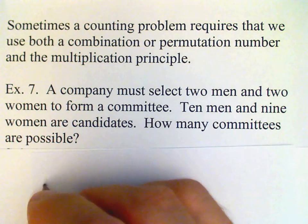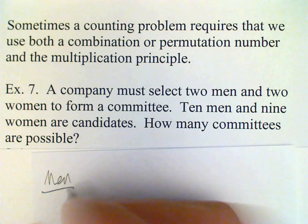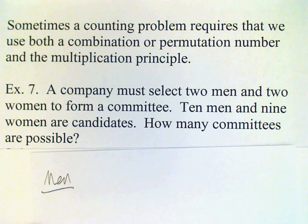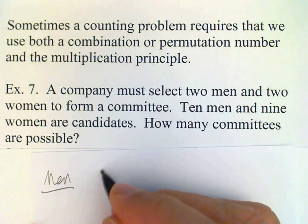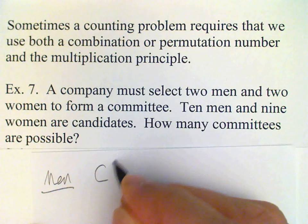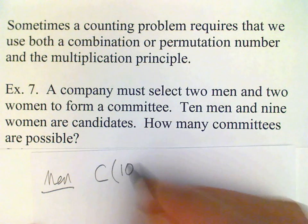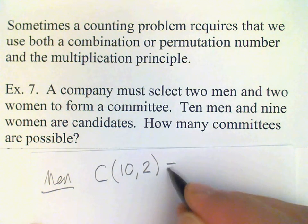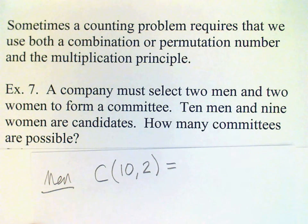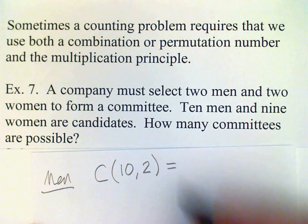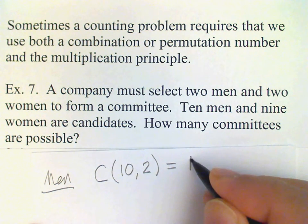For the men, of course the order does not matter, so we're going to use C. There are ten men available and we're going to select two of them. So C(10,2) and that is 45.